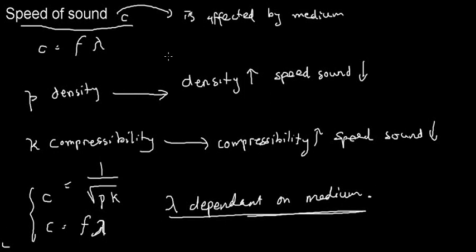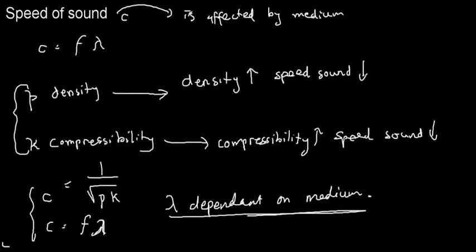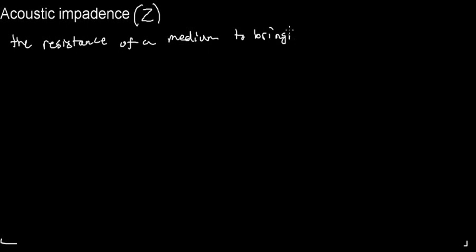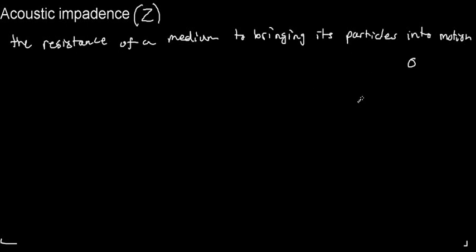So this covers the speed of sound with respect to the medium it propagates through and its properties. Now we're going to talk about another property of the medium: acoustic impedance, denoted by uppercase Z. Acoustic impedance is the resistance of a medium to bringing its particles into motion.